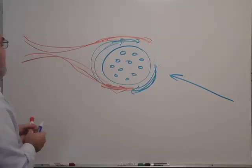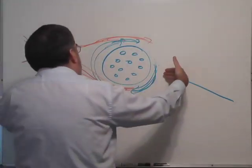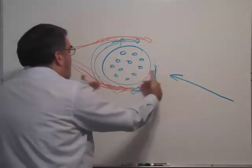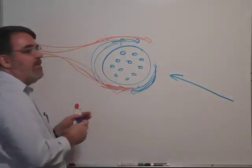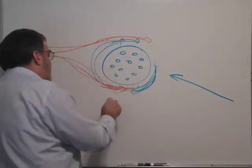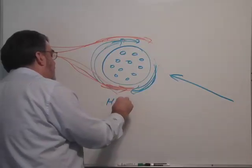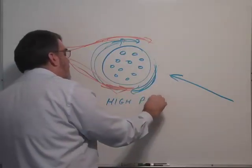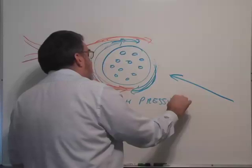So what happens? You have air meeting together here on the bottom. It's colliding. These air molecules are colliding and it increases the air pressure down below. So we have a higher pressure on the bottom of the ball, but on the top of the ball,